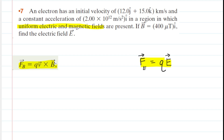We're going to begin by analyzing the magnetic force acting on this electron. If we look at the equation for the magnetic force, we can see that it involves a cross product between the velocity and the magnetic field. So let's take a look at how we can set that cross product up.